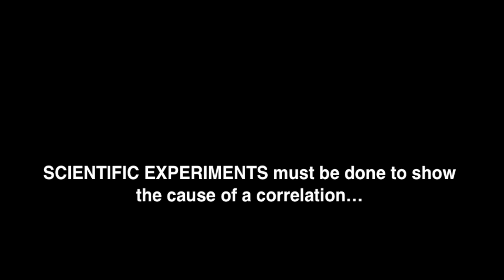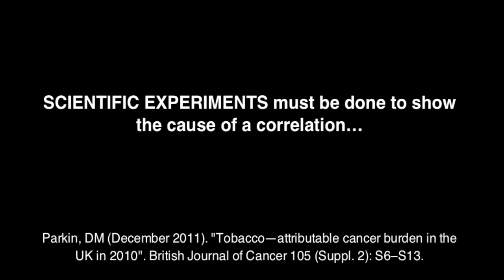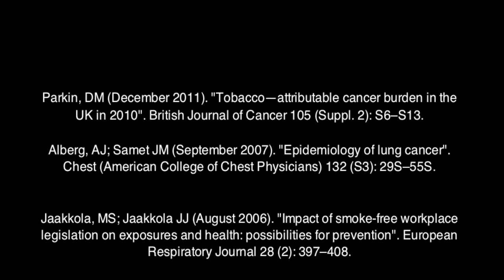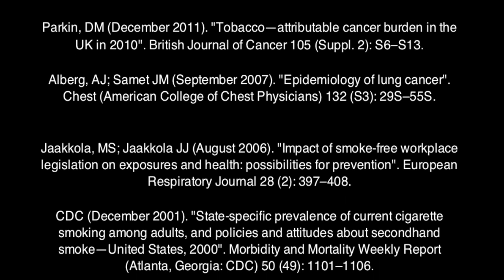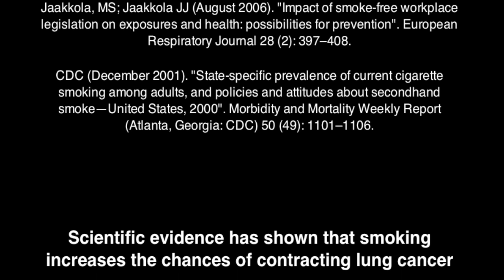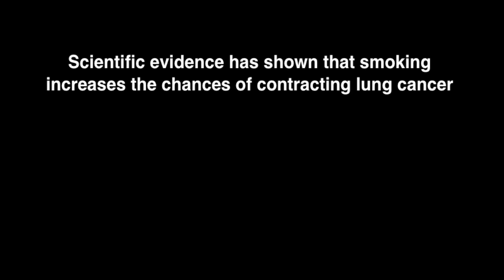To establish the cause of a correlation, controlled scientific experiments must be done. In the example we have been looking at, to see whether smoking actually causes lung cancer, a number of scientific experiments have been done, and evidence has been collected showing that smoking increases the chances of contracting lung cancer. The primary point to be made here is that the existence of a correlation does not necessarily establish a causal relationship — it may or it may not. A controlled scientific experiment is needed to establish cause.